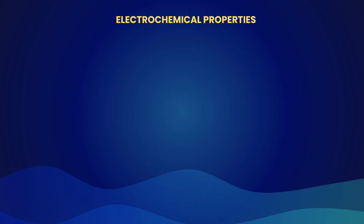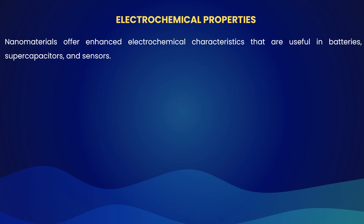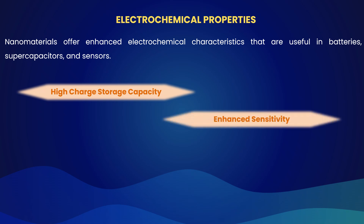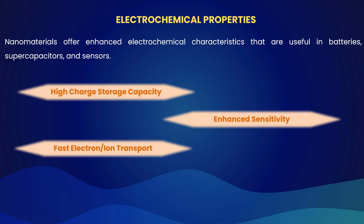Let's talk about electrochemical properties. Nanomaterials have enhanced electrochemical properties. They are used for high charge storage capacity because their large surface area allows storing more charges. In applications like sensors, nanomaterials show improved detection capability due to their high surface activity, giving enhanced sensitivity. Last but not least, they have fast electron and ion transport capability — nanostructures shorten diffusion paths, improving charge and discharge rates, enabling high charge transport.